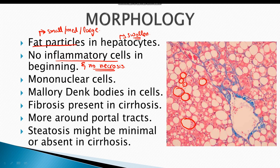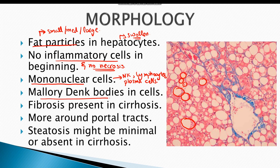Once the disease progresses into non-alcoholic steatohepatitis, inflammatory cells start to appear inside the liver tissue. Unlike alcoholic liver disease, the inflammatory cells in non-alcoholic fatty liver disease are mostly mononuclear cells, including natural killer cells, lymphocytes, and plasma cells. Specific amorphous eosinophilic aggregates known as Mallory-Denk bodies are also present in the hepatocytes, as they are in alcoholic liver disease.